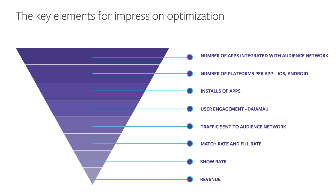For show rate, this involves which ads you decide to show, and that's in your control. You can request a certain number of ads from Audience Network, but depending on what your users are doing in your app, you may only show a percentage of these filled ads. Most importantly, for impression optimization, Audience Network works best when we're at the top position of your mediation waterfall. Eventually, all of these factors will impact your impressions on Audience Network.